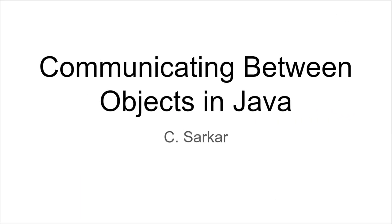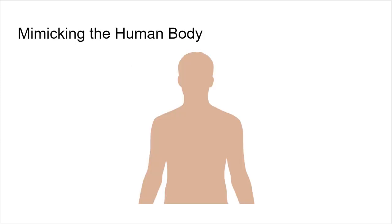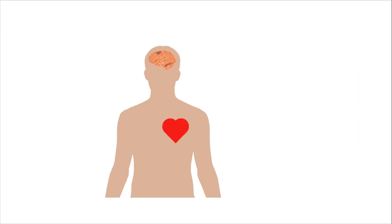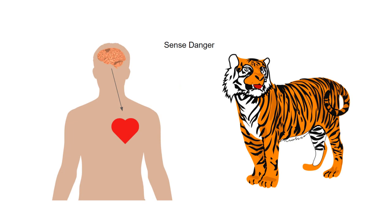In this tutorial, we're going to discuss how objects inside a Java program can talk to each other while the program is running. We're going to create a class that mimics the actions of the human body, with a brain class and a heart class inside a human body class. Our goal is to have the brain send a message to the heart to tell it to beat faster when the human senses danger.